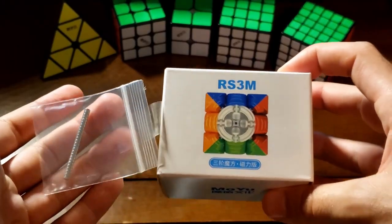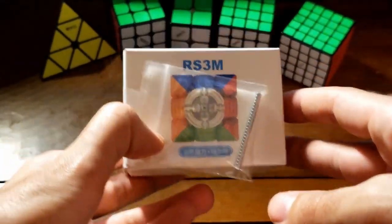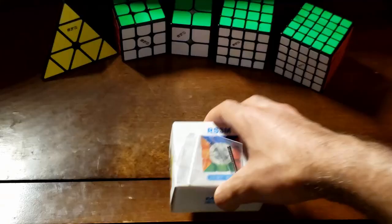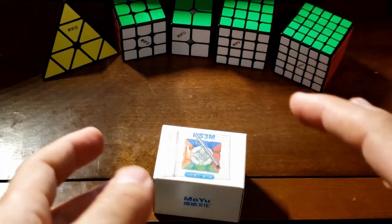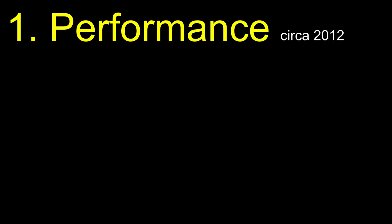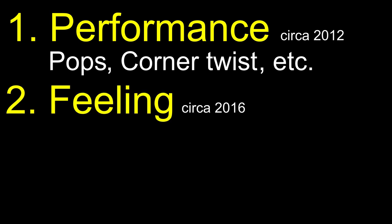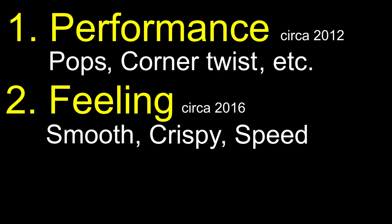So I think the RS3M 2020 has gotten a lot of hype because it's supposed to be a budget customizable cube. Now if you're unfamiliar in cubing, cubing went through several paradigm shifts with 3x3 hardware. First was the phase of performance and it was all about how the cube performs, does it pop, does it corner twist, etc. And after that was sort of standardized, next feeling. Feeling became the most important thing to a puzzle. What differentiated the puzzle, how smooth is it, how crispy is it, stuff like that.